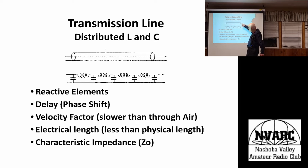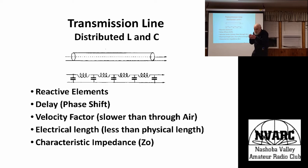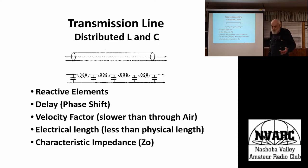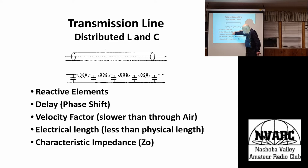A transmission line has an inductance per unit length and a capacitance per unit length. It's just a very large string of little inductances and little capacitances. They're all reactive, so they can't dissipate any power — however, there is a delay through the line, or equivalently a phase shift; those are two ways of describing the same thing.